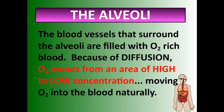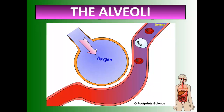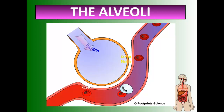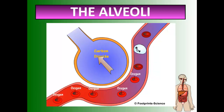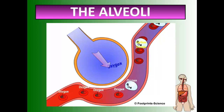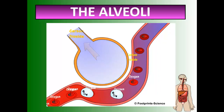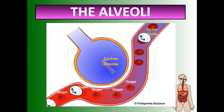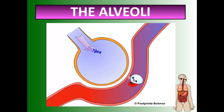The blood vessels surrounding the alveoli are filled with O2-rich blood because of diffusion — oxygen moves from an area of high concentration in the alveoli to an area of low concentration in the blood. At the same time, carbon dioxide diffuses out of the blood because there is a high concentration of carbon dioxide in the blood and a low concentration in the alveoli. One coming in, one going out, and it happens so fast.